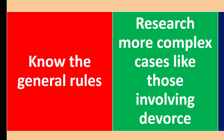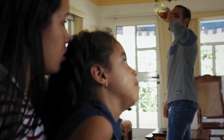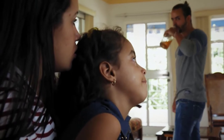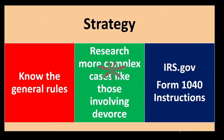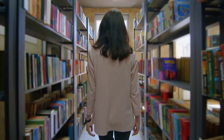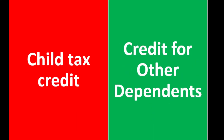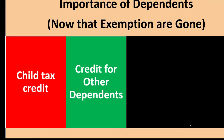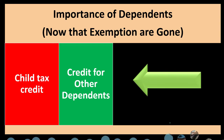Oftentimes, at least with regards to dependents, when there are custody issues, you want to start at the Form 1040 instructions, which can often reference you to other areas to look into. Items that could be affected by dependents include things like the child tax credit — that's the first thing that comes to mind. If you don't qualify for that, you usually have the credit for other dependents. Those two things are linked in terms of your questionnaire or thought process.